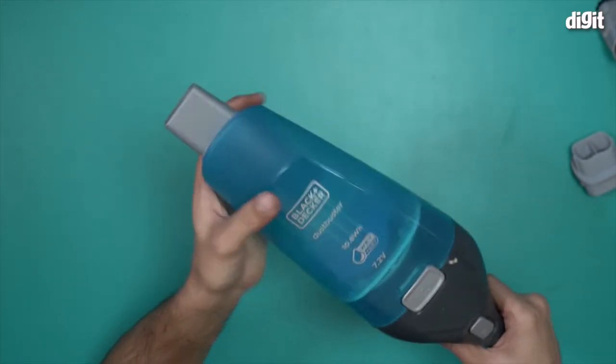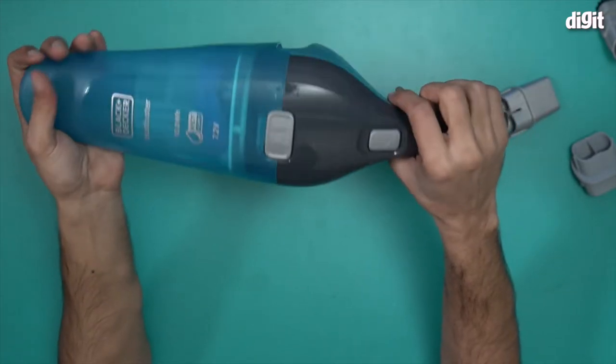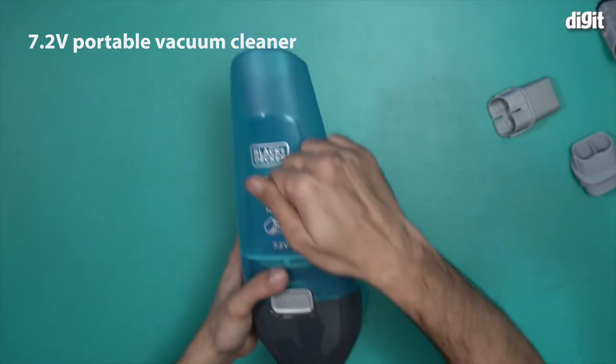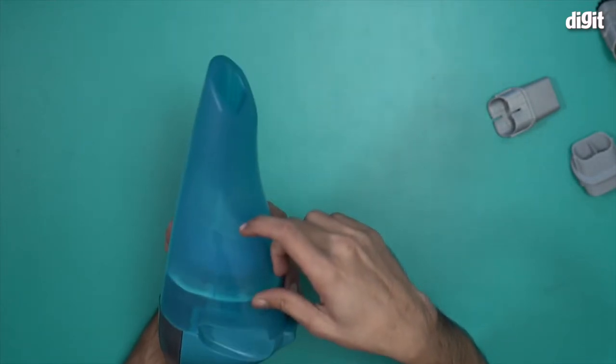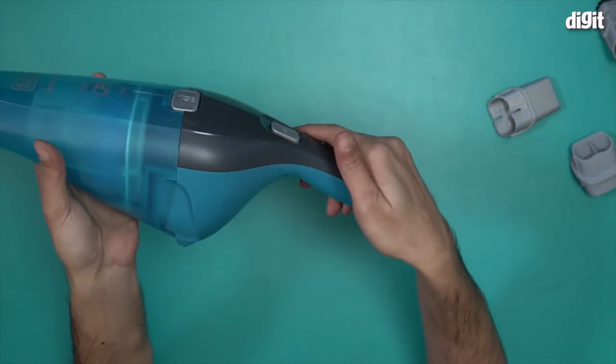Talking about the vacuum cleaner, it has this blue and gray color combination. As you can see, this part is gray and the rest is blue. This part is transparent as well - not transparent, more like translucent. You'll be able to see the bag over here.